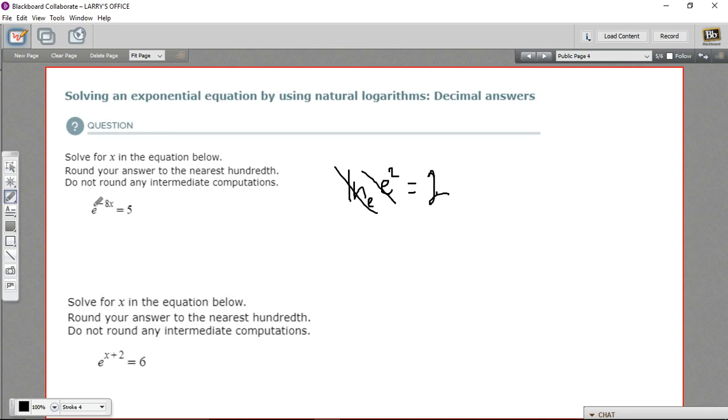What we're actually going to do is take the natural log of this expression. Of course, we have to take the natural log of both sides of the equal sign to follow the rules of algebra. But let's see how that goes. So we're going to take the natural log of the expression e to the negative 8x, and we're going to take the natural log of 5.